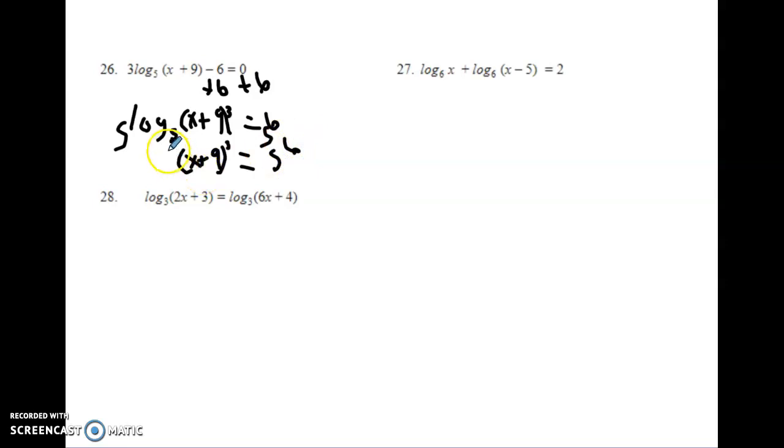Now, if I raise both sides to the power of 5/3, there's a lot of powers going on here, so what we can do is take the third root of each side, and I end up with just x plus 9 equals 5 squared. 5 squared is just 25, and then I'm going to minus the 9 from that side. So, 25 minus 9 ends up to be 16 as your answer.